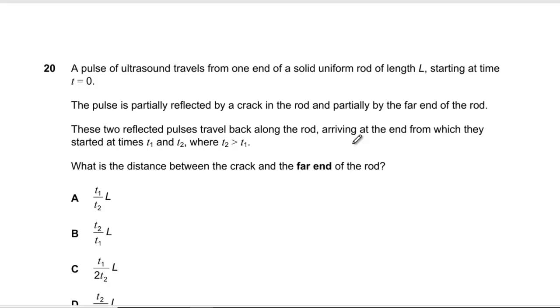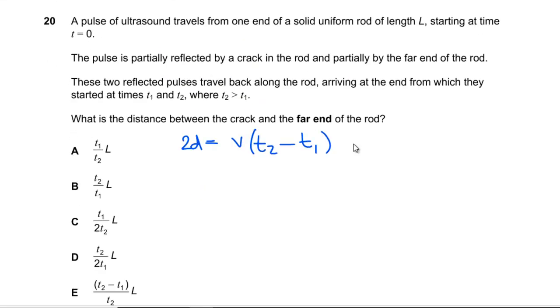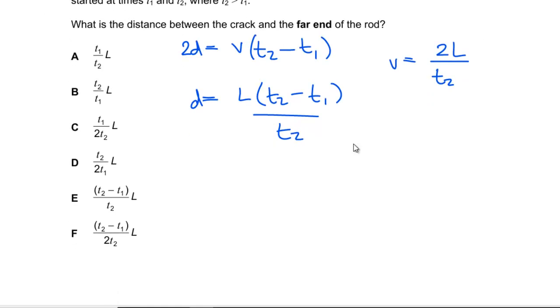Question 20: Pulse of ultrasound travels from one end of a solid uniform rod of length l. Partially reflected back by a crack and partially by the far end of the rod. You get two different arrival times. What's the distance between the crack and the far end? t2 is the time out and back, so two lots of d is vt2. The difference between the times is t2 - t1. But they don't have v in the answers, so v equals 2l/t2. Those twos will cancel, so d equals l(t2 - t1)/t2, which is E.